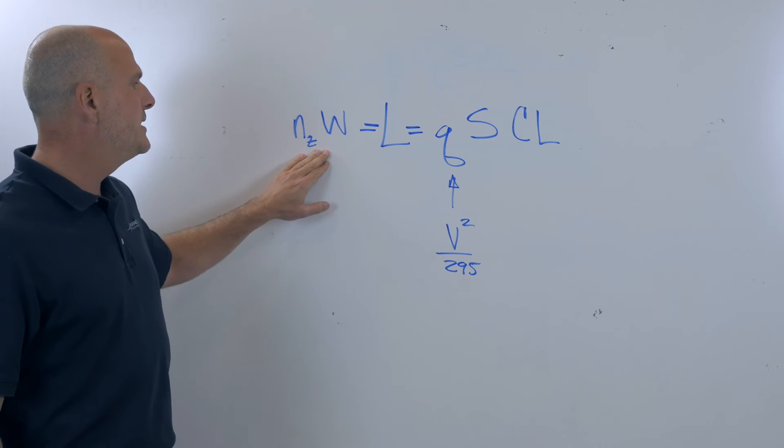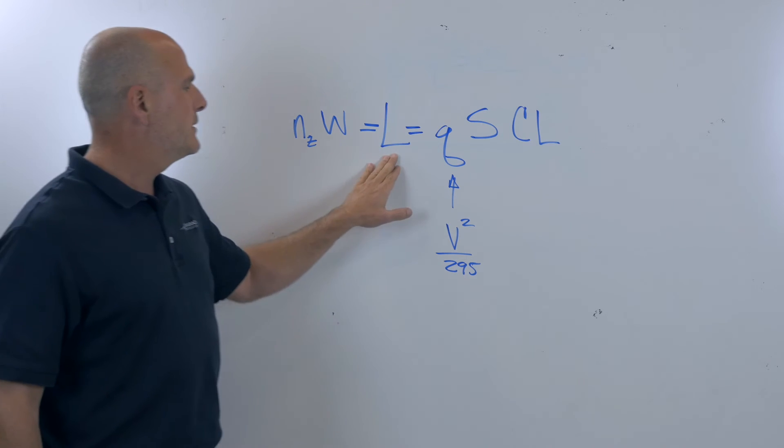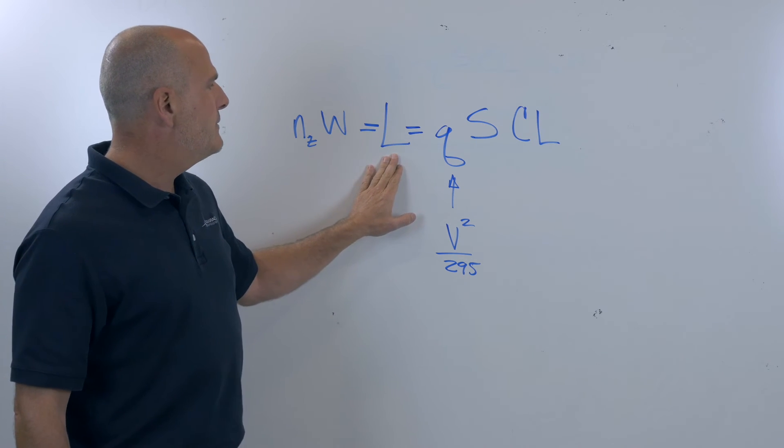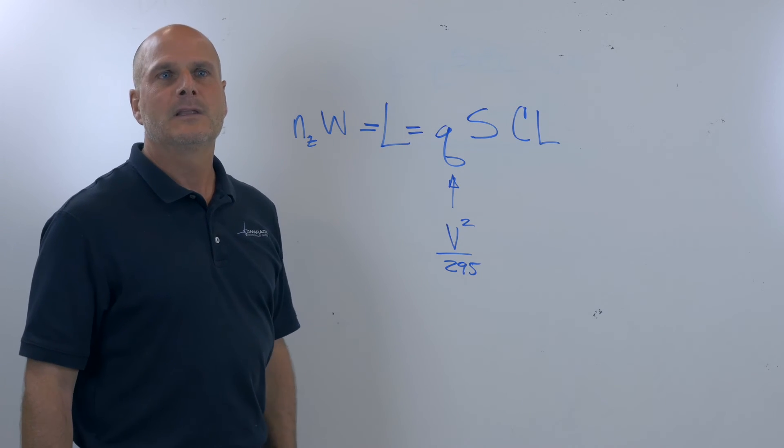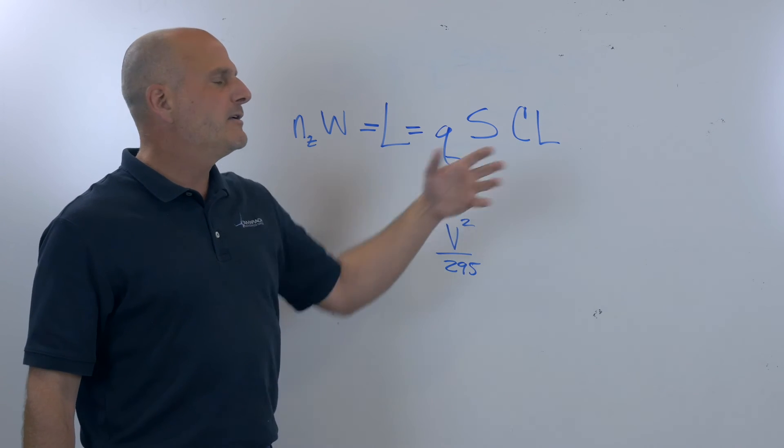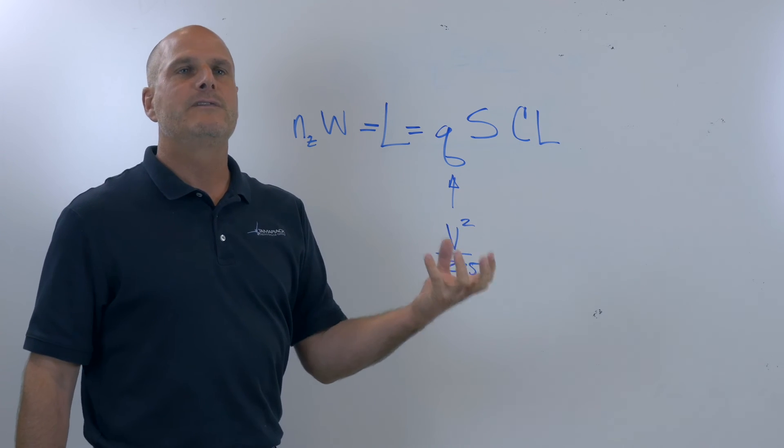This also has to equal NZW. So this term here is described by this simplistic term. CL is the amount of, it's a non-dimensional lift coefficient.